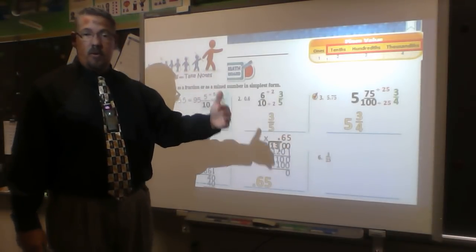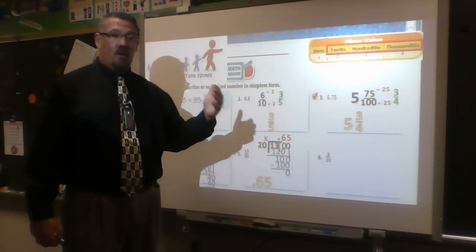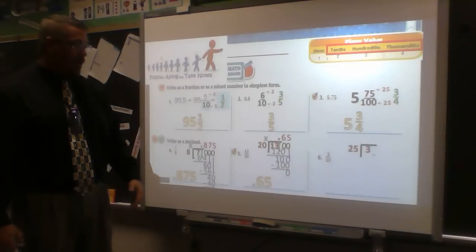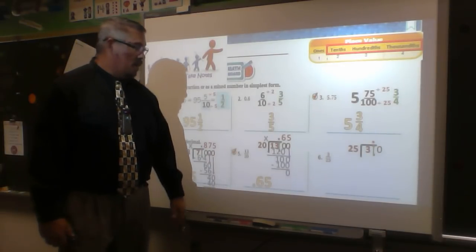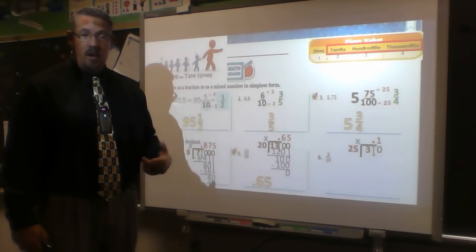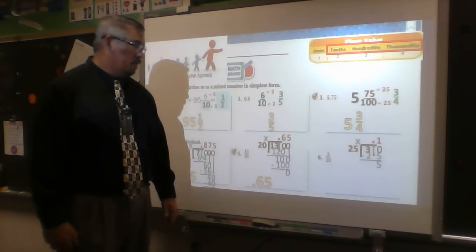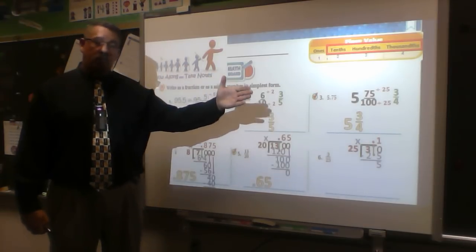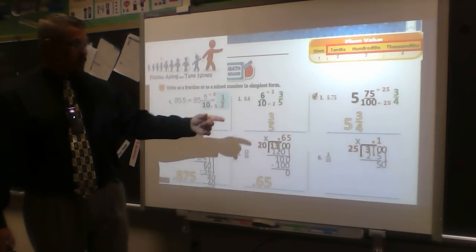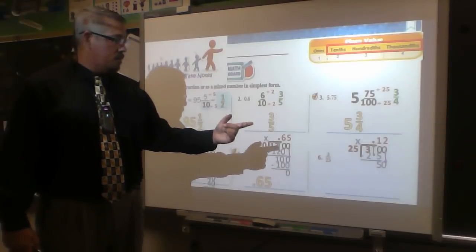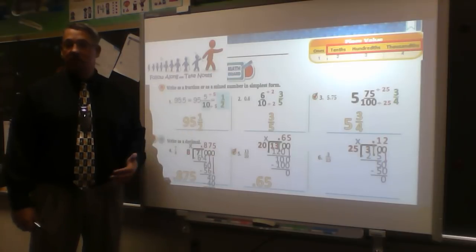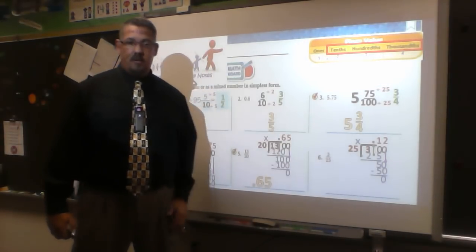For 3/25: take numerator divided by denominator. It's a smaller number, so add decimal and zeros. 25 goes into 30 one time (1×25=25), remainder 5. Add another zero — 25 goes into 50 two times (2×25=50), remainder zero. So 3/25 equals 0.12 — twelve hundredths. We're just converting between forms — changing from one form into another.